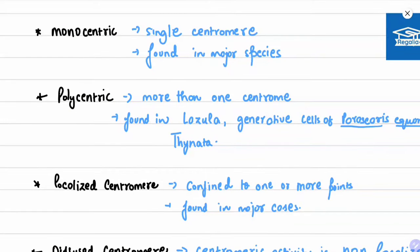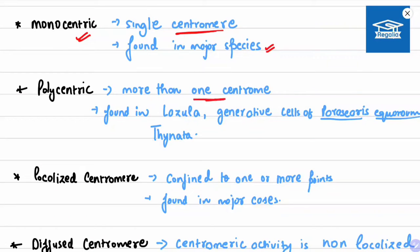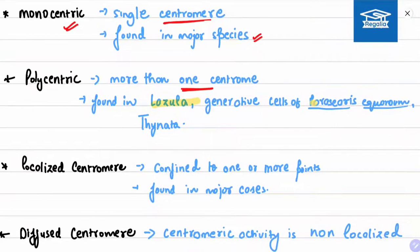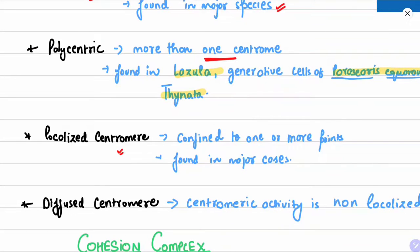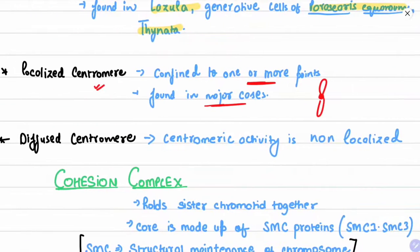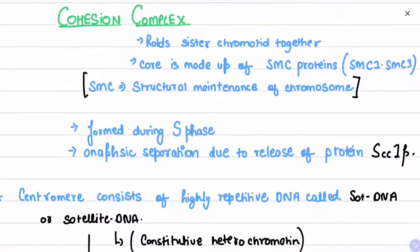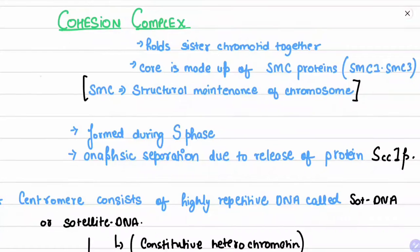On the basis of number of centromeres: monocentric chromosomes have a single centromere, found in the majority of species. Polycentric chromosomes have more than one centromere — examples include Luzula, generative cells of Parascaris equorum, and Ascaris. Localized centromere means confined to one or more points. Diffuse centromere means the activity is non-localized.